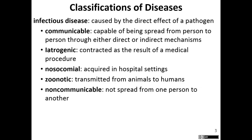Zoonotic diseases are diseases transmitted from animal to human — rabies is a zoonotic disease. Noncommunicable diseases are diseases that can't be spread from person to person. An example would be botulism — a patient with botulism won't pass that disease on to you. Typically, noncommunicable diseases come from the environment, like dirt, which may be their normal reservoir.